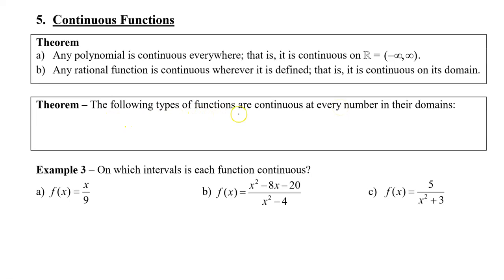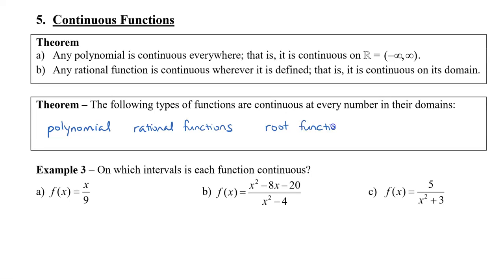The following types of functions are continuous at every number in their domains. Of course, I've already stated polynomials and rational functions. Remember, it's on its domain, so we are assuming that it's not continuous where we divide by zero. The same with root functions — on its domain where the radical is positive if it's an even degree. And we also have trigonometric functions, where continuity is on its domain.